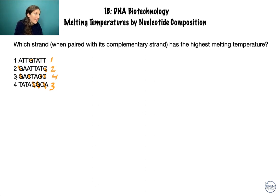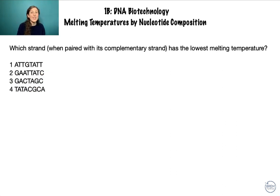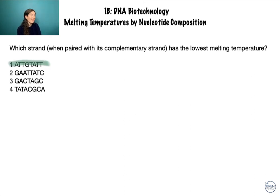We're looking for the highest melting temperature, so strand three with four GC pairs is the answer — the most GC content gives the highest melting temperature. For the opposite question — which strand has the lowest melting temperature — we look for the least GC content, which is strand one with only one GC pair, meaning it has the most AT content relative to the others.